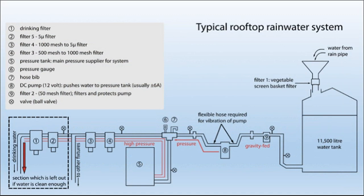This is a typical figure showing a rooftop rainwater system. The components of the rooftop rainwater system enlisted include: a drinking filter, a 5-micron filter, a 1000-mesh or 5-micron filter, a 500-mesh to 1000-mesh filter, a pressure tank serving as the main pressure supplier for the system, a pressure gauge, a hose bib, a DC pump of 12 volts which pushes water to the pressure tank, and a 50-mesh filter providing filtration and protection for the pumps and walls.